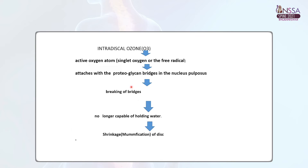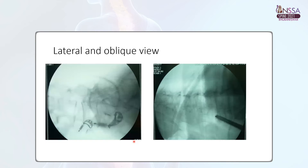How does ozone act? Ozone is converted into its three free radicals — singlet oxygen — which attach to the proteoglycan bridges and break them. Once broken, the proteoglycan is no longer able to hold water, and this leads to disc shrinkage.